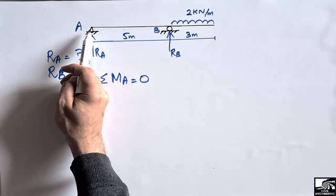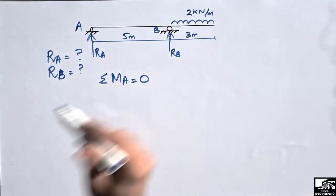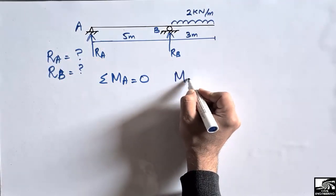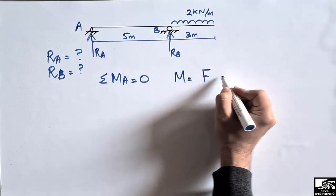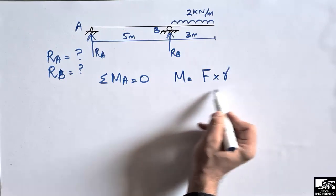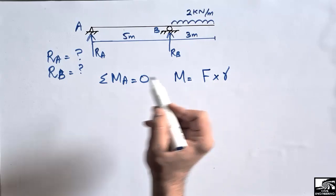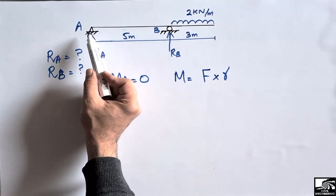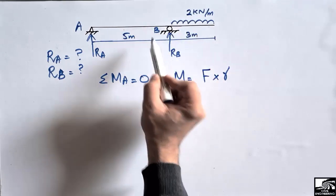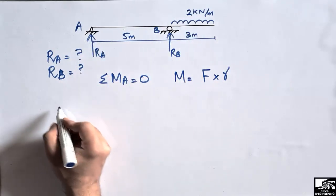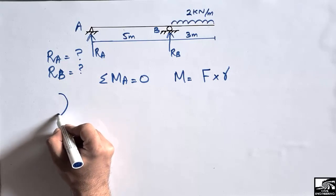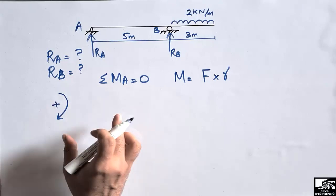To find the support reactions, we take the summation of moments at point A equal to zero. The moment is found by multiplying force by the moment arm. To take the summation of moments at point A equal to zero, we find all the moments at point A.